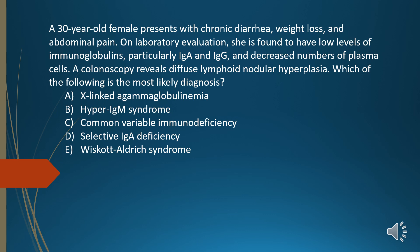A. X-linked agammaglobulinemia. B. Hyper-IgM syndrome. C. Common variable immunodeficiency. D. Selective IgA deficiency. E. Wiskott-Aldrich syndrome. The answer is C, common variable immunodeficiency.